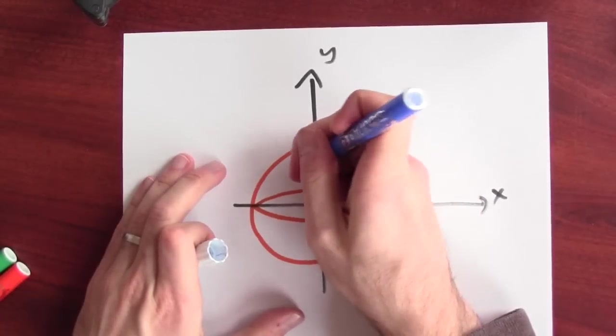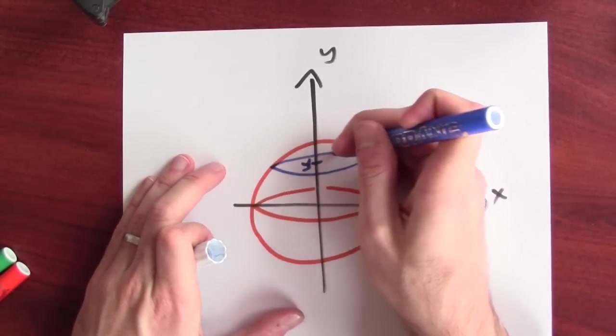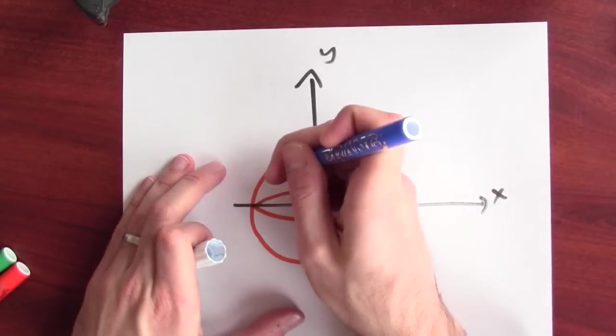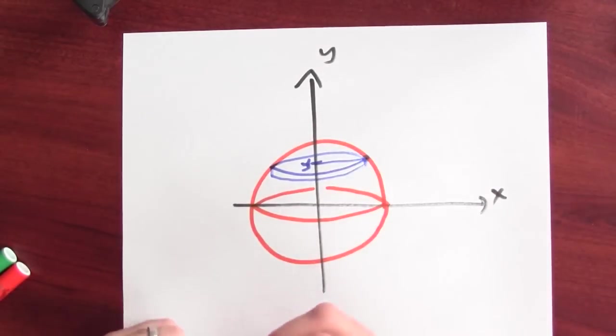And here's the sphere sitting in space. And at some height, I'll call that height y, I've got a thin cylinder. And what I want to do is figure out the radius of that thin cylinder.